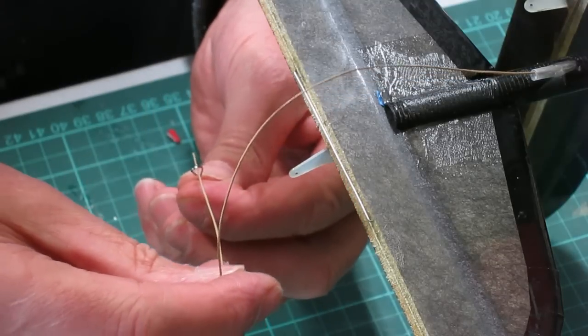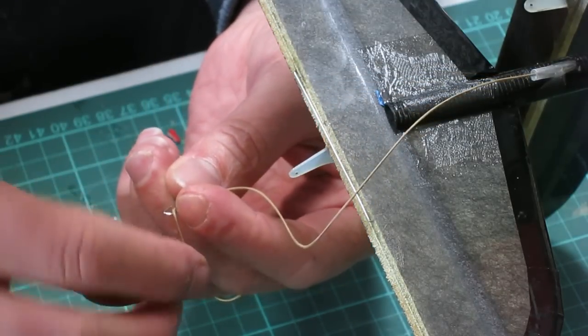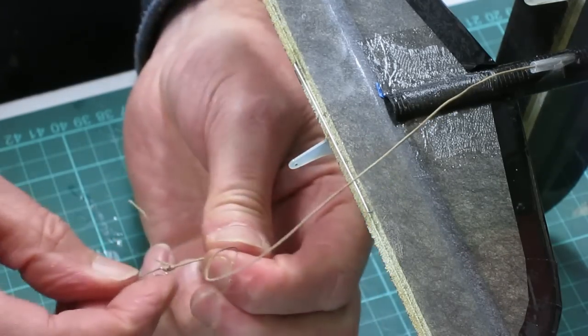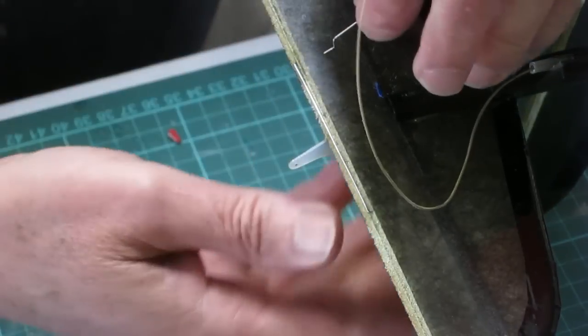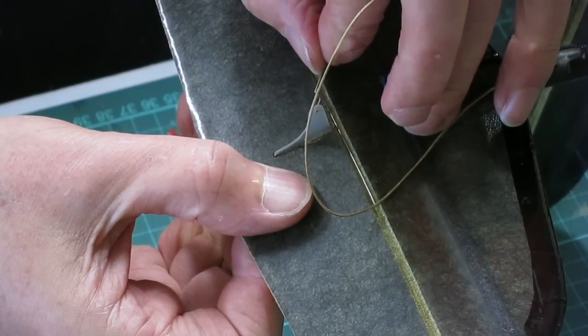I bent up some little Z bend hooks from the pushrod wire and I just tie the control line to that. And that hooks into the control horn. You don't have to worry about slop in these connections because they're always under tension.